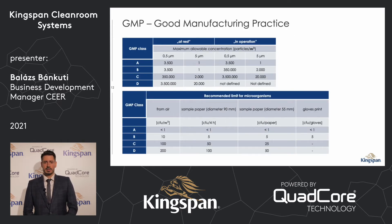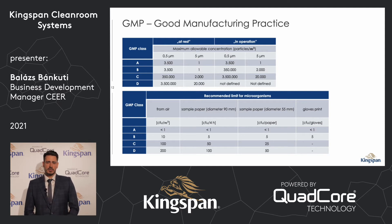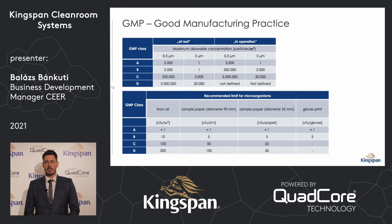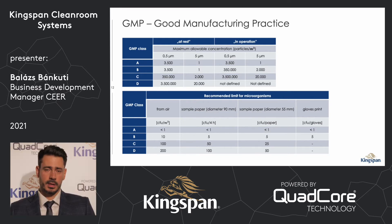The GMP standard classifies rooms into four classes: A, B, C, or D. The GMP standard measures not only the particle numbers in the cleanroom, it also includes microorganisms. After the cleanroom is built, a validation company will do the measurement. They will measure the air quality and the microorganisms in the cleanroom, and after this measurement they will validate the cleanroom and assign the classification: A, B, C, or D.